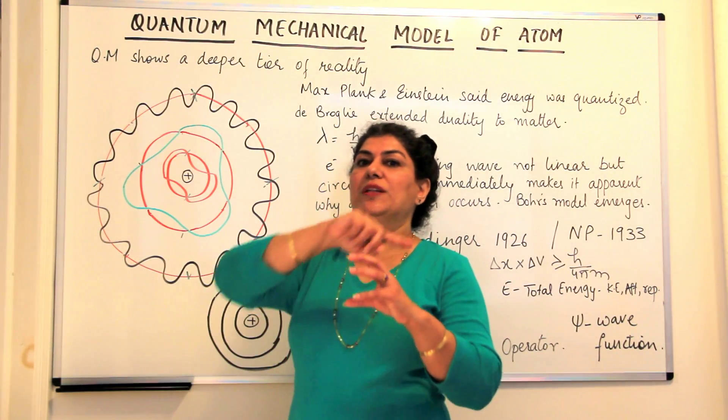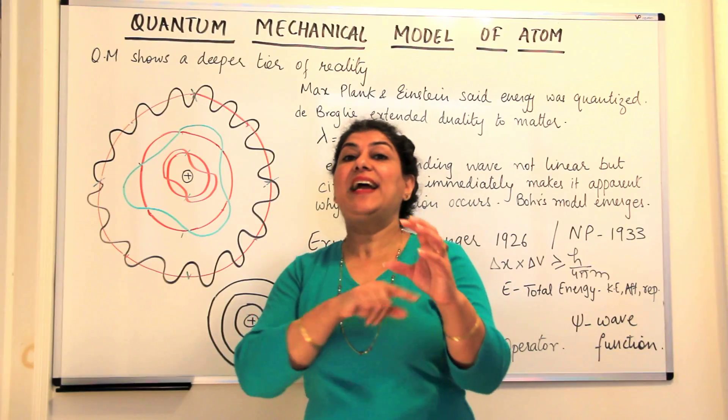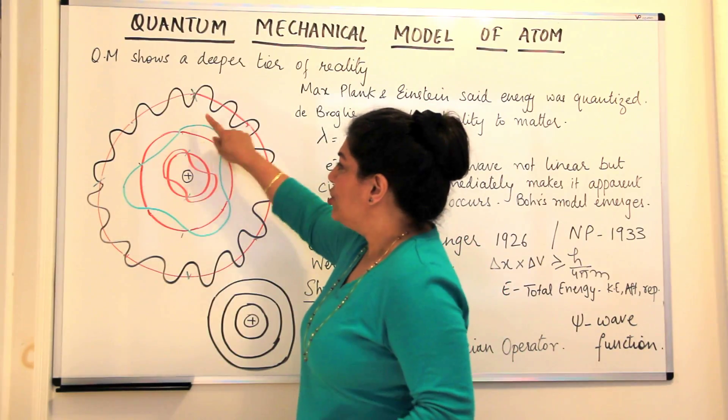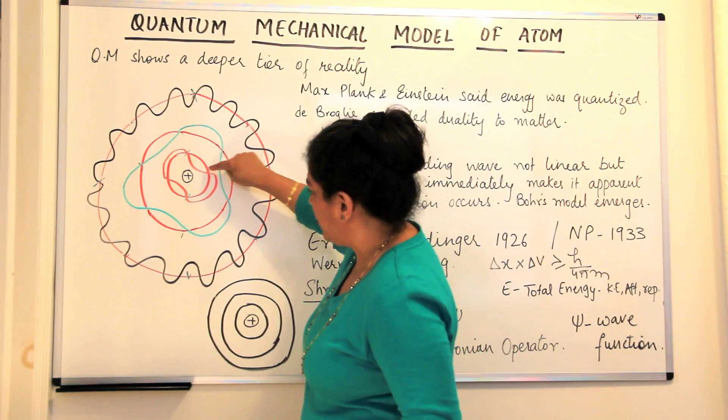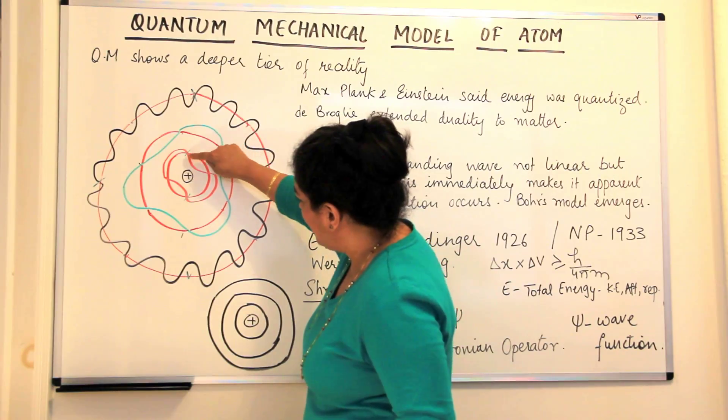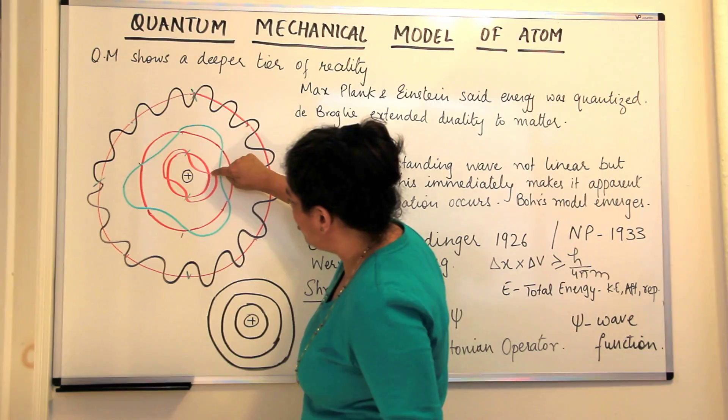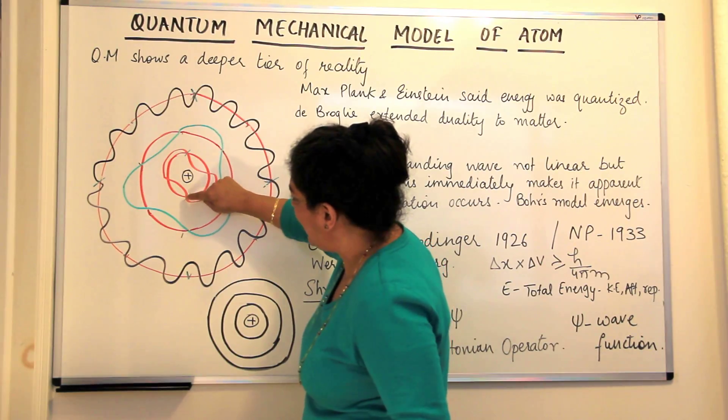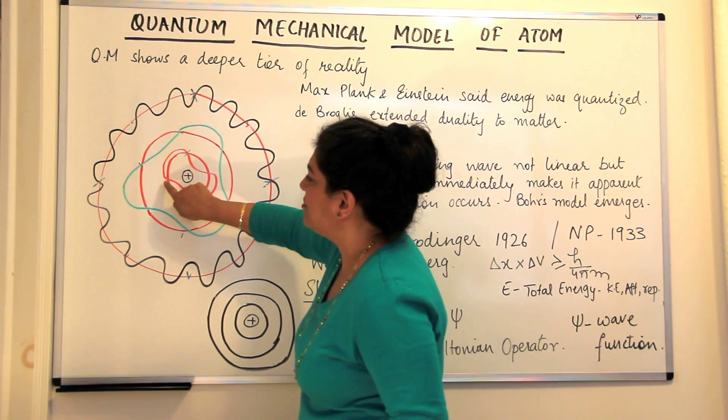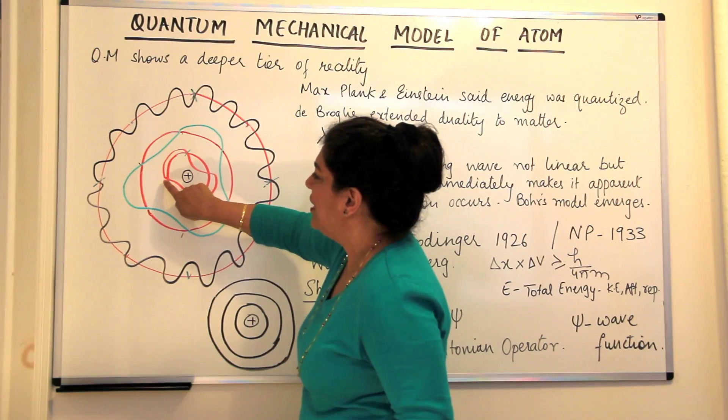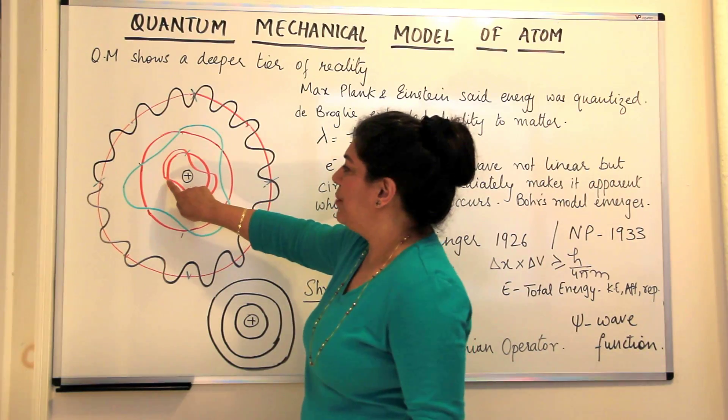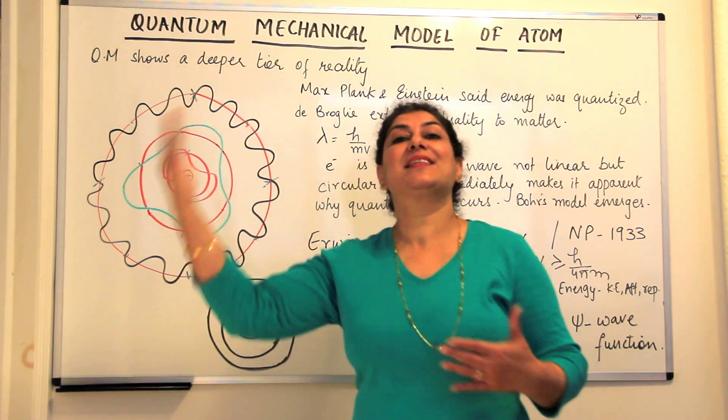For n is equal to two, there should be two wavelengths and the end of the second wavelength, the end of this wave, this is the second one that I made. This is the crest and this is the trough, one wave. This is the crest and this is the trough and it becomes the beginning, the end of this wave, the second wavelength becomes the beginning of the next cycle.